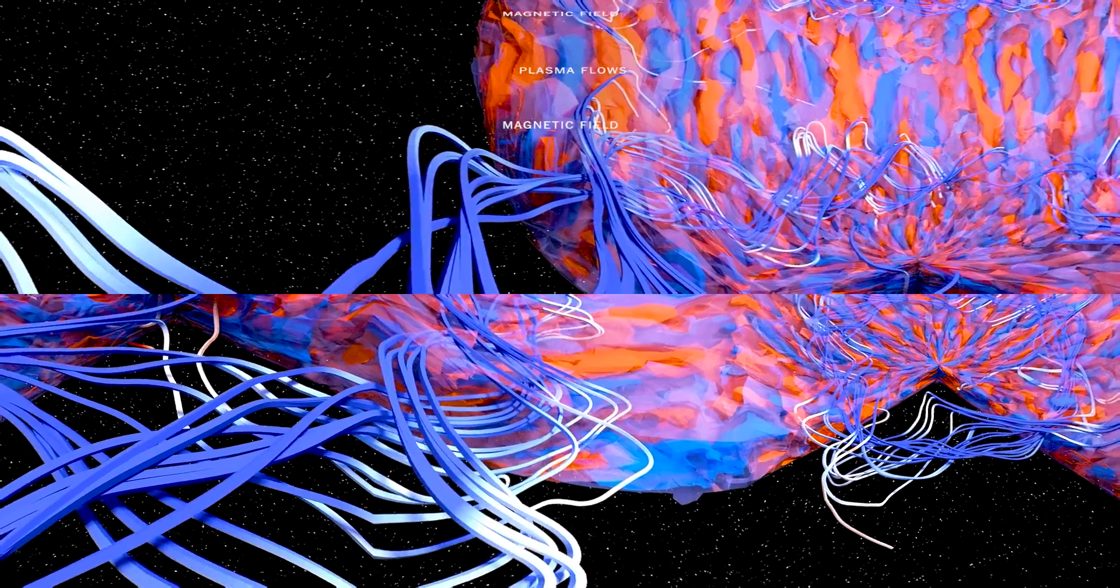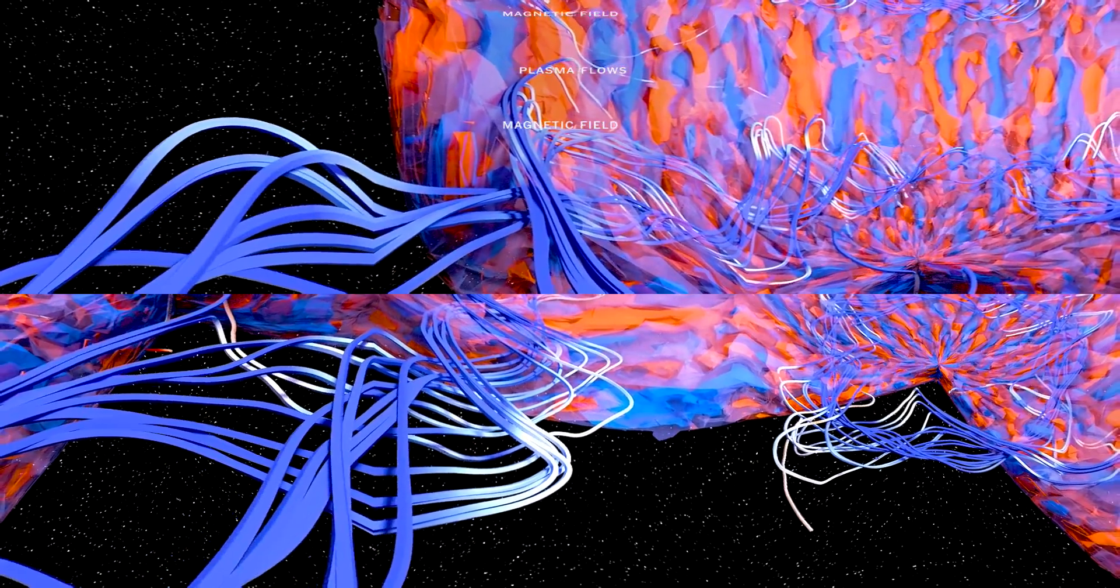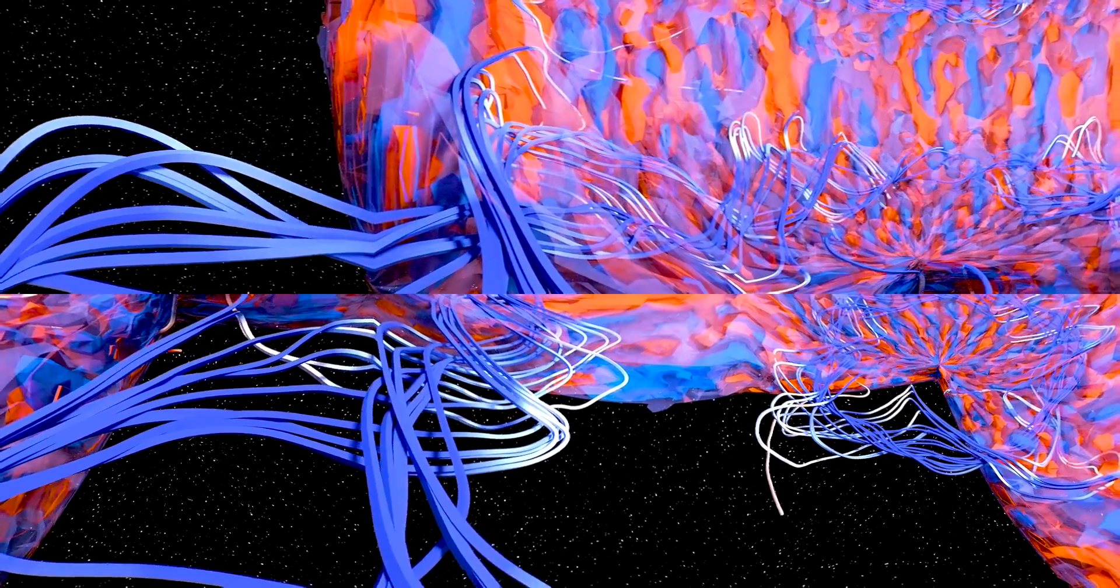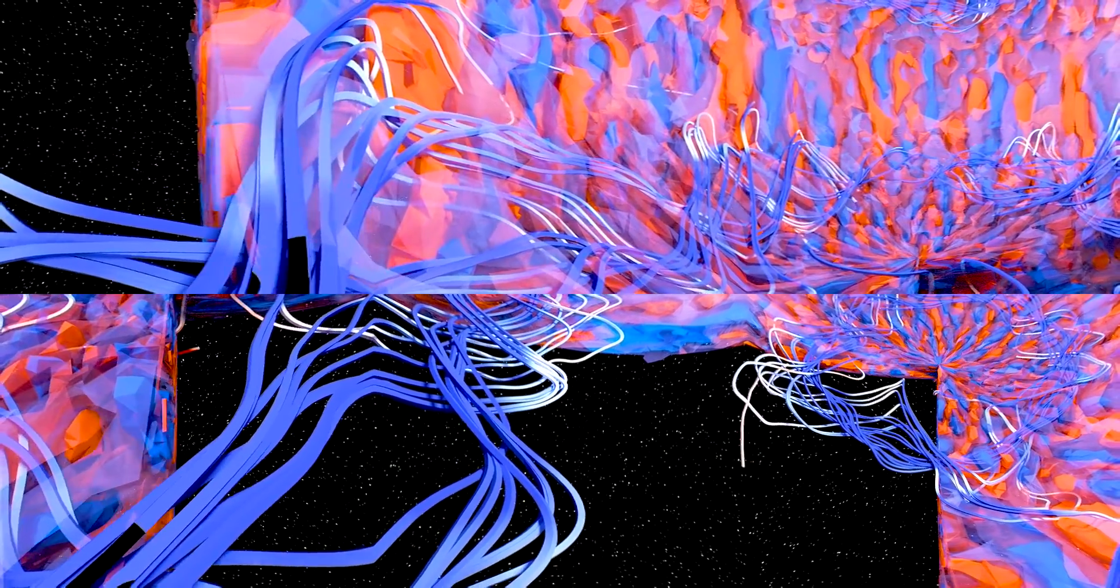The convection of plasma flows inside the Sun generates its magnetic field. These flows are shown as blue and red shapes, with blue representing flows moving towards the center of the Sun and red flows moving outward towards the surface.